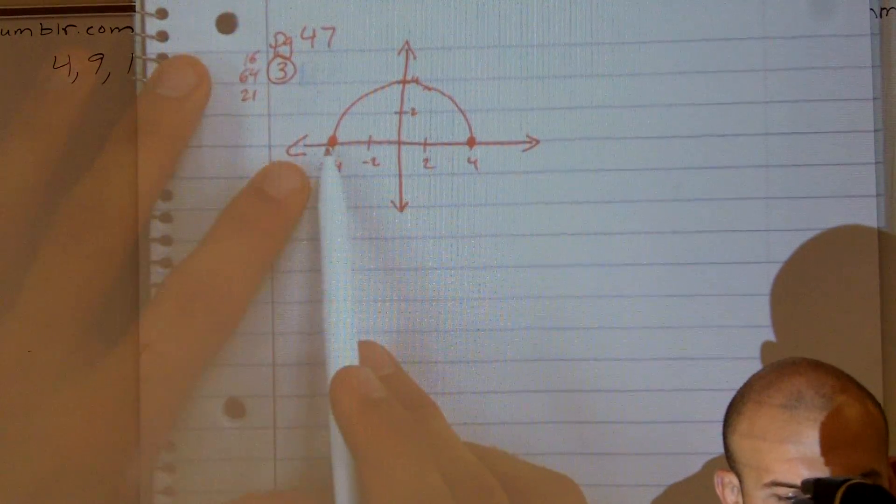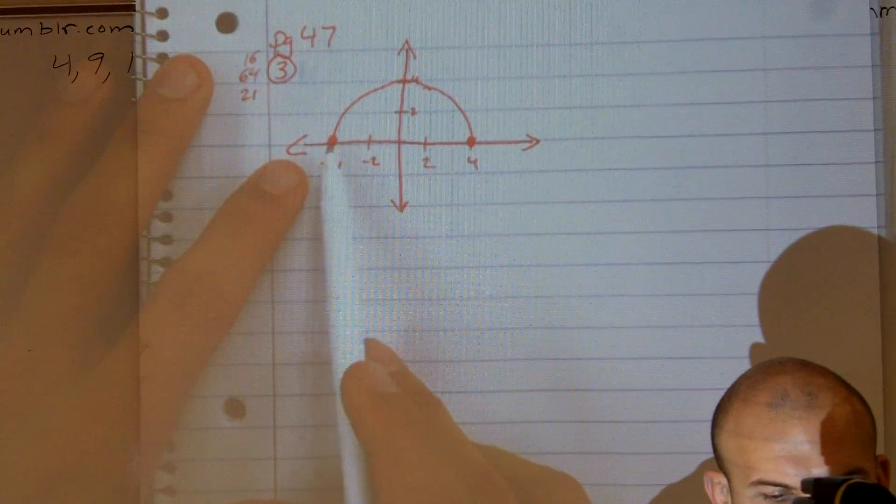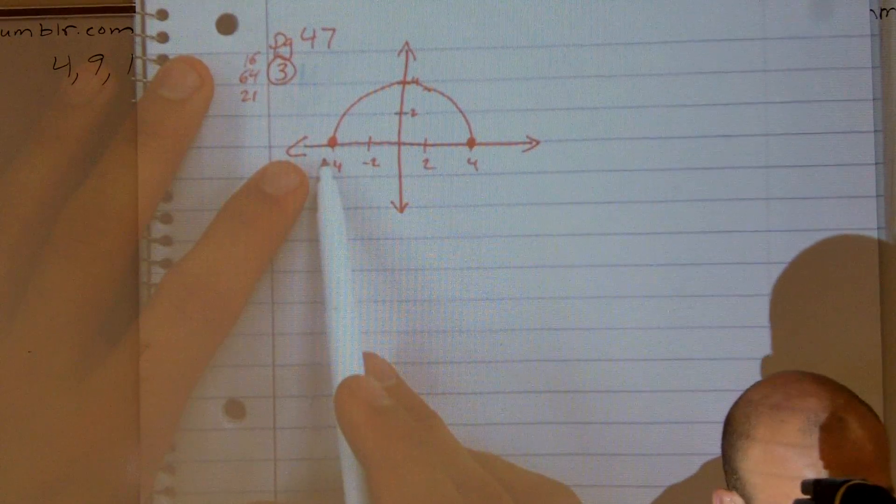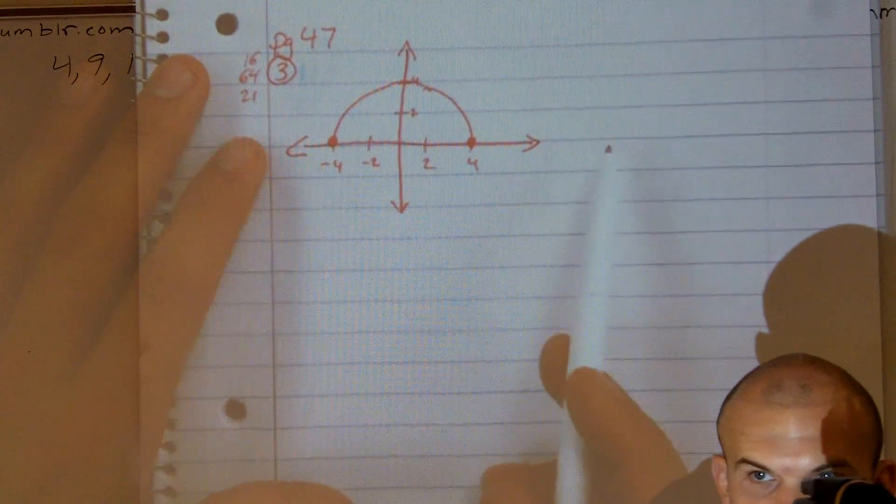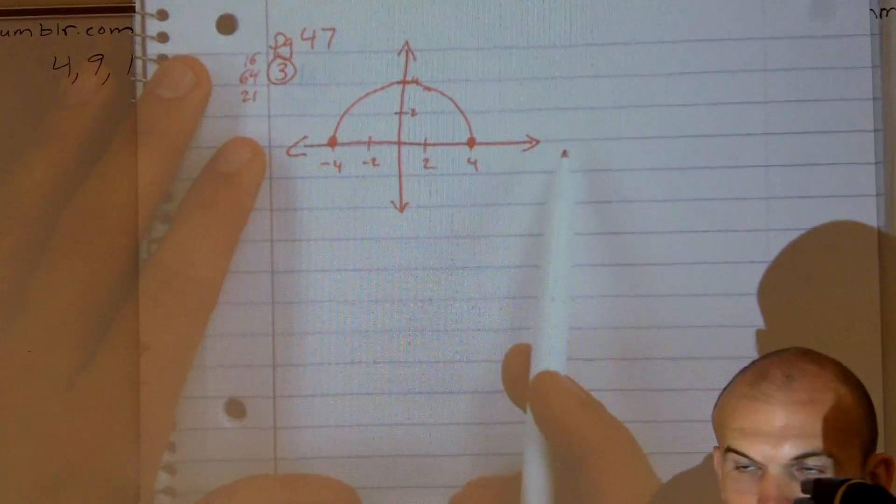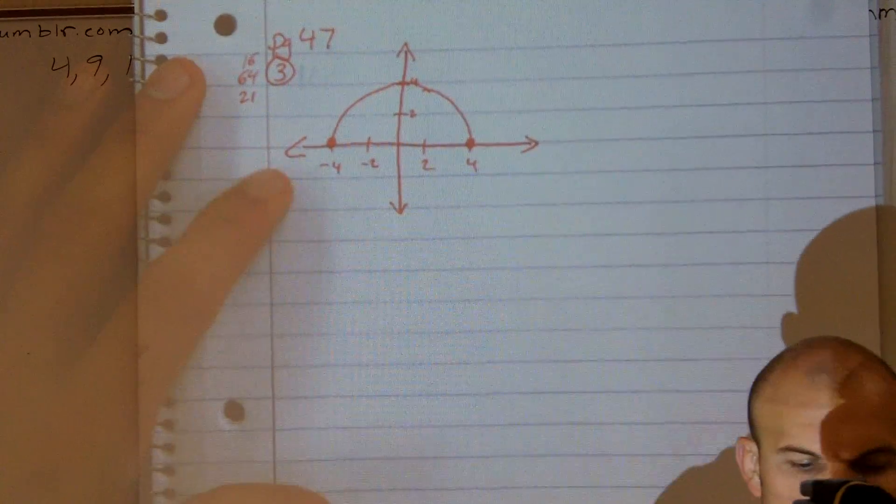And you could say, well, the only values that I see defined for x are between negative 4 and 4. Anything outside of there, there's no graph, so x is not defined.